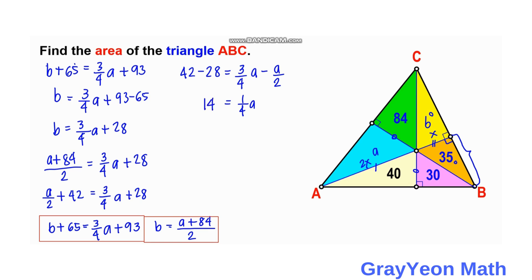Cross-multiplying, A = 14 × 4, so the area of A is equal to 56 square units.